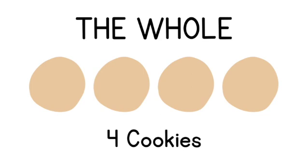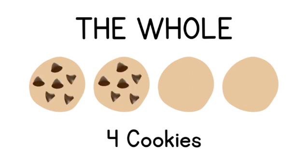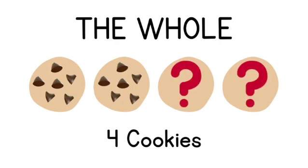In this example, we have the whole, Molly's four cookies, and we know one part. Two of the cookies are chocolate chip. What we need to do does not involve removing any cookies, like in the first example, but we need to find the unknown part. How many sugar cookies does Molly have?